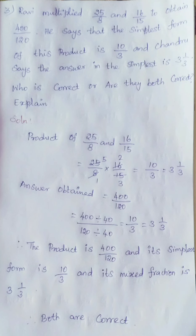Product of 25 by 8 and 16 by 15 equals 25 divided by 8 into 16 by 15. We are simplifying. We get 10 by 3. 10 by 3 is an improper fraction.